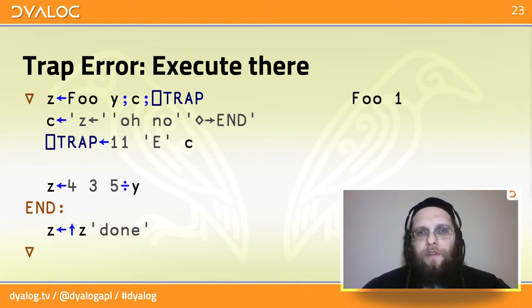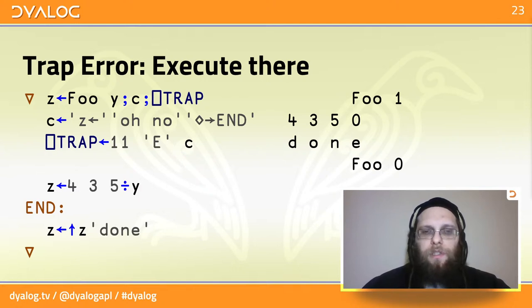Now, if we run the function with one as an argument, which is a valid right argument for the division, then we got normal result. And if you run it with zero, which causes a domain error in the division, then the error trap kicks in and the flow goes through the error trap running these two statements, continuing down with the end label and done.